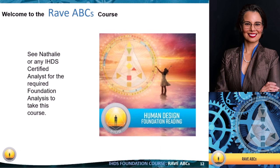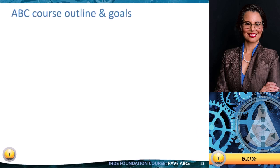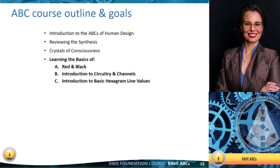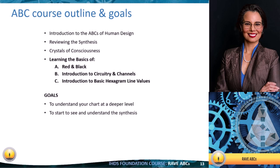This course is for those who are well-versed in their own design, because with ABCs we're looking at how to start working with this information with others as well. It's an empowering extension of Living Your Design. We'll introduce the ABCs, review the synthesis of the component structure of human design, talk about the crystals of consciousness, and learn the basics: A for red and black, B for introduction to circuitry and channels, and C for basic hexagram line values. Our goals are to help you understand your chart at a deeper level and begin integrating the elements into basic keynoting.